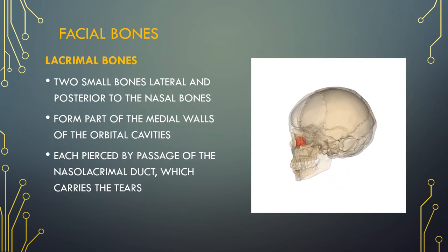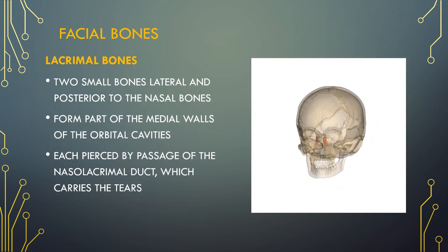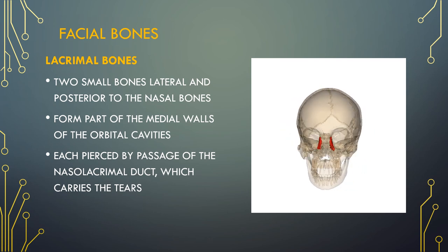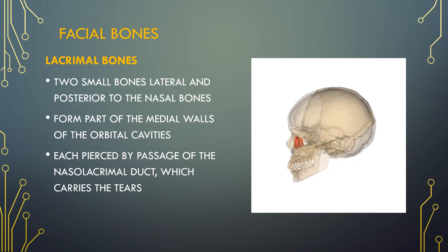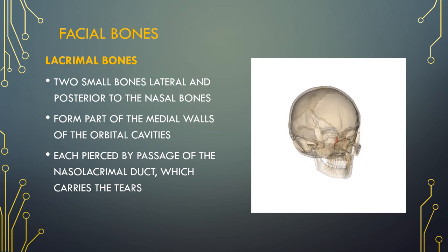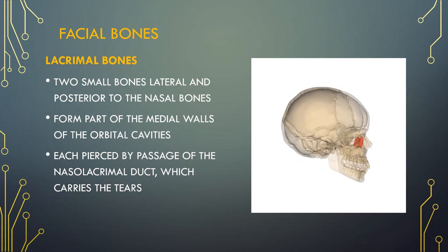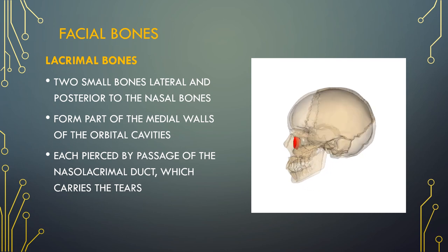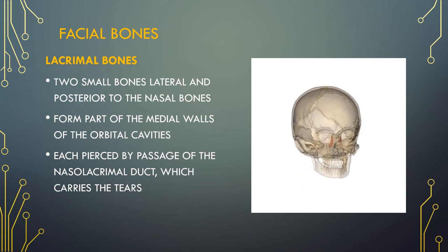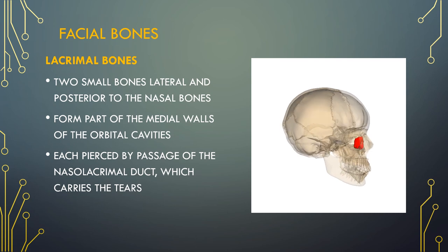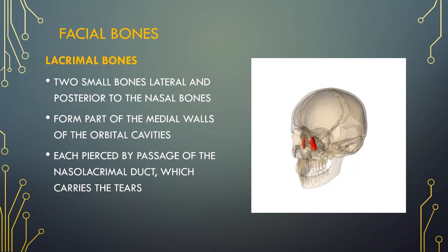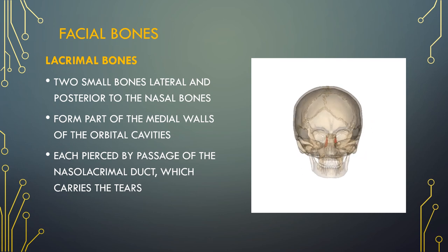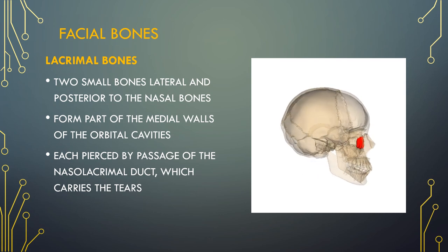Lacrimal bones are two small bones, lateral and posterior to the nasal bone. They are part of the lacrimal tear production system. The lacrimal system contains a lacrimal gland and produces tears, and the nasolacrimal duct, which drains tears from the eye to the nose. Lacrimal bones provide structure for the orbital cavity and support the eye.